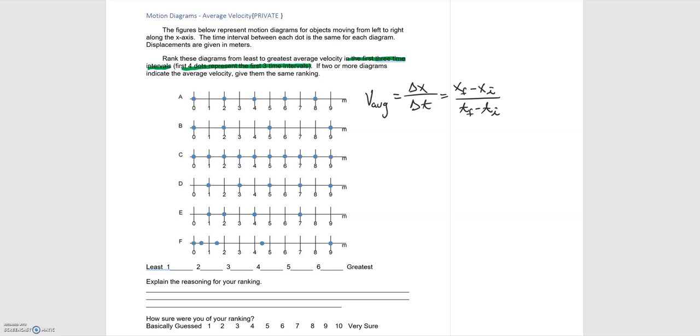So we start at the first dot and then we count two, three, four, and we put another mark there, and now that is our three time intervals. Let's do the same for the rest of them. We go here and then we have four.